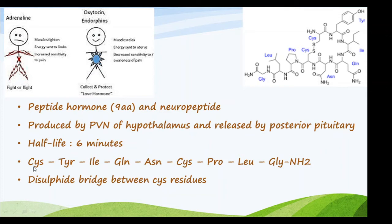The nine amino acids are cysteine, tyrosine, isoleucine, glutamine, asparagine, cysteine, proline, leucine, and glycine. There is a disulfide bridge between the two cysteine residues.